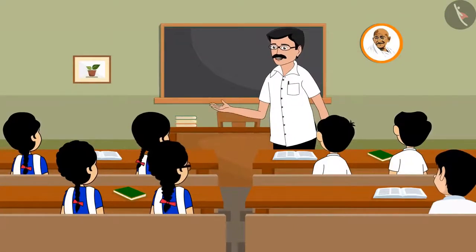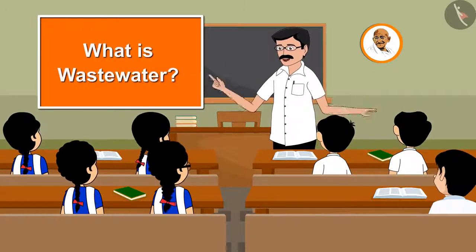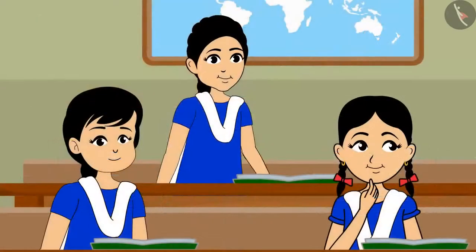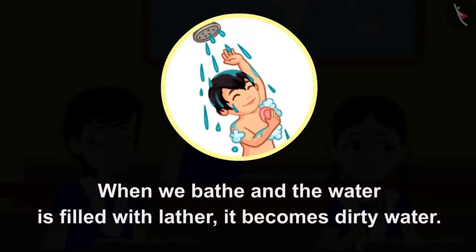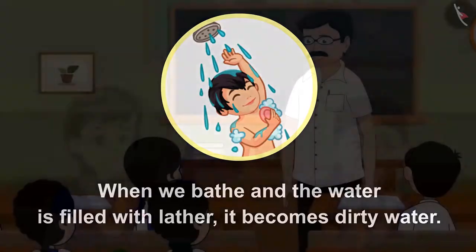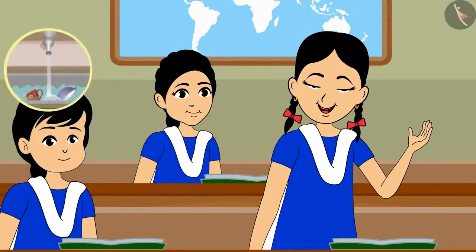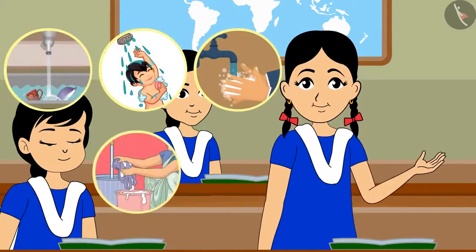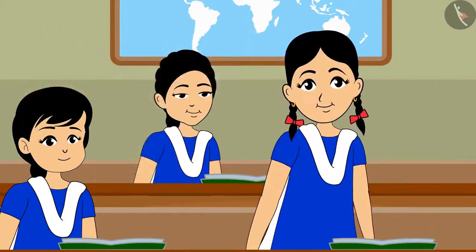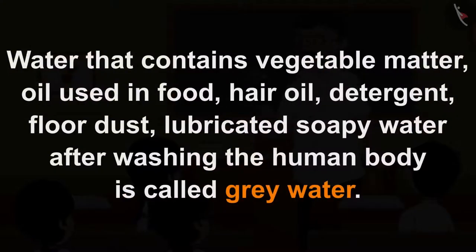Correct. People get sick due to wastewater or dirty water. When we bathe and the water is filled with lather, it becomes dirty water. The water that comes out from washing utensils, from bathing, washing of hands, washing of clothes, etc. is also dirty water. This water contains vegetable matter, oil used in food, hair oil, detergent, floor dust, lubricated soapy water after washing the human body.